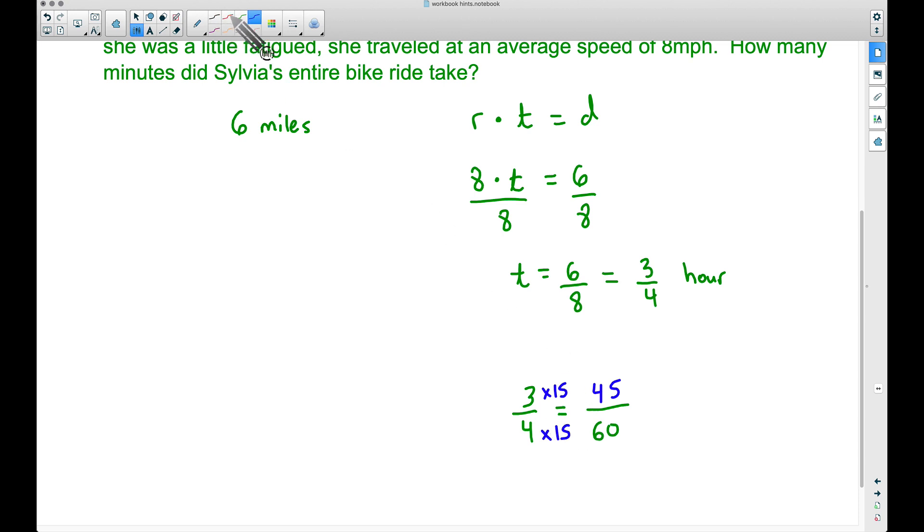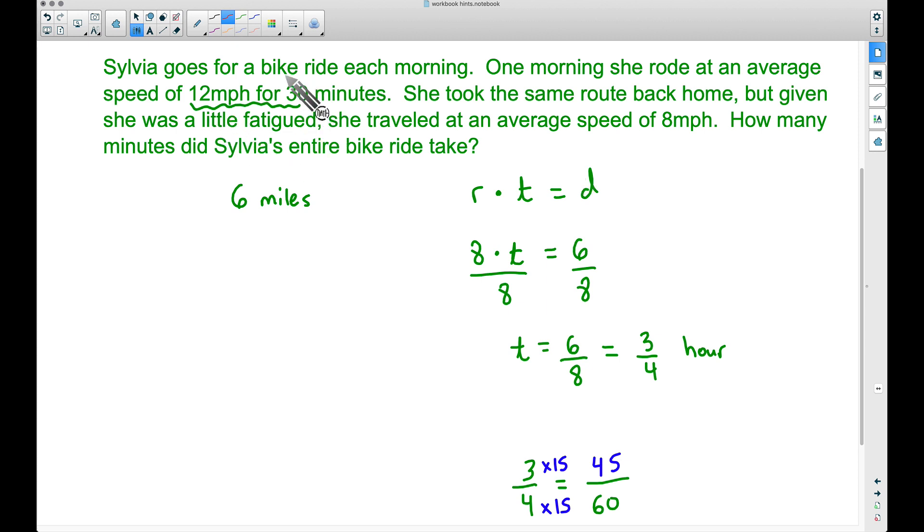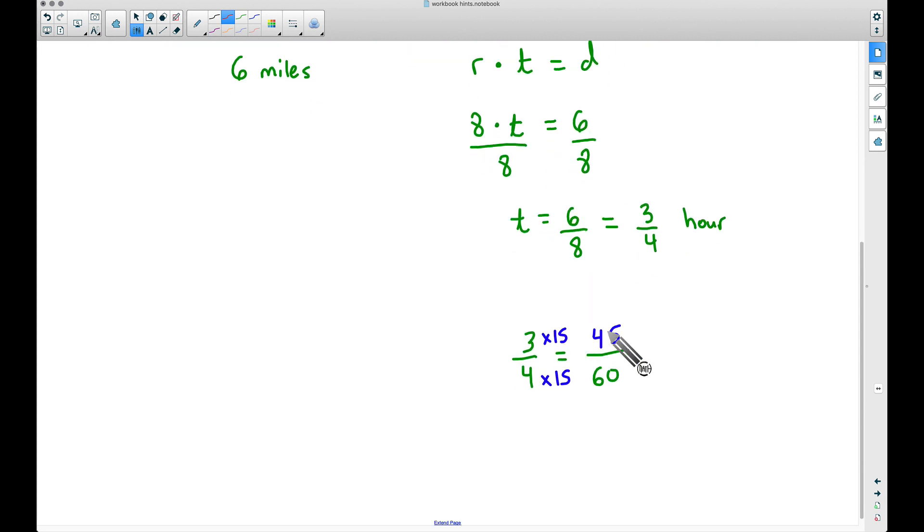Now to address the final question here: how many minutes did Sylvia's entire bike ride take? Well remember at the beginning she traveled for 30 minutes. The same route back home, this should make a little bit of sense now because it took her 45 minutes to get back home. It should have taken her longer, which it did, because she was traveling at a slower rate. So the total time here, what we want to make sure we do for the entire bike ride, is to add up the 30 minutes plus the 45 minutes and we will get a total of 75 minutes.